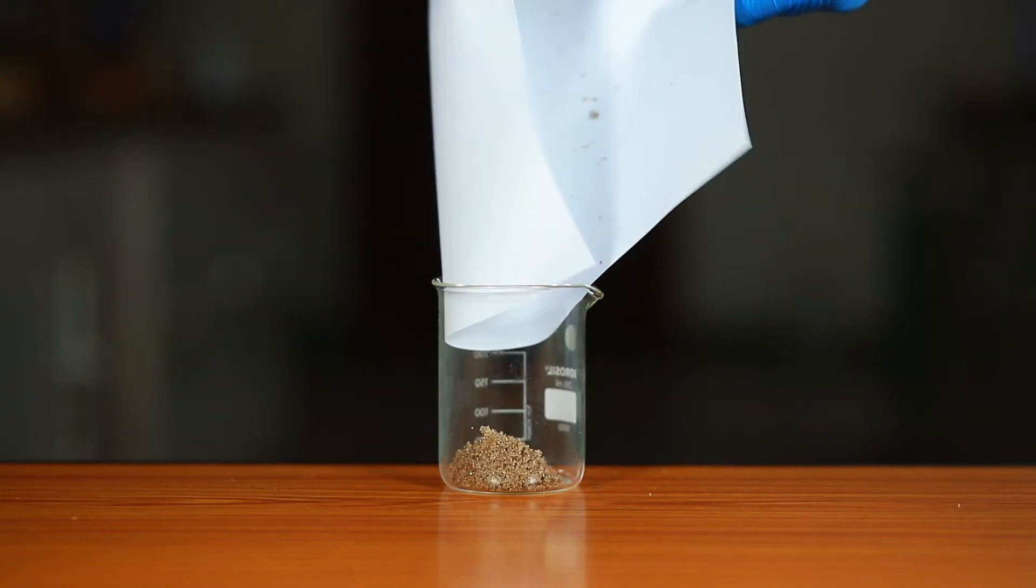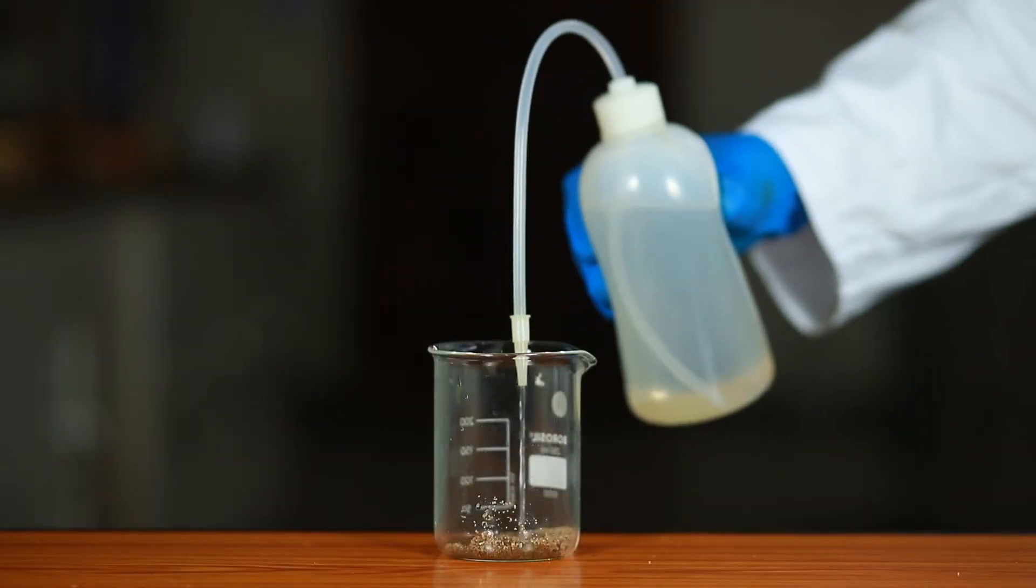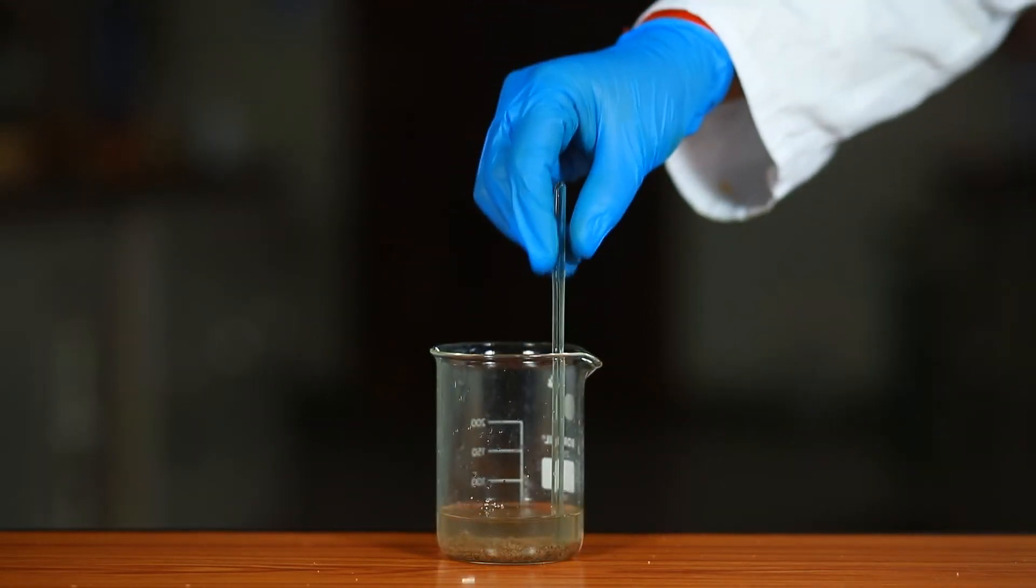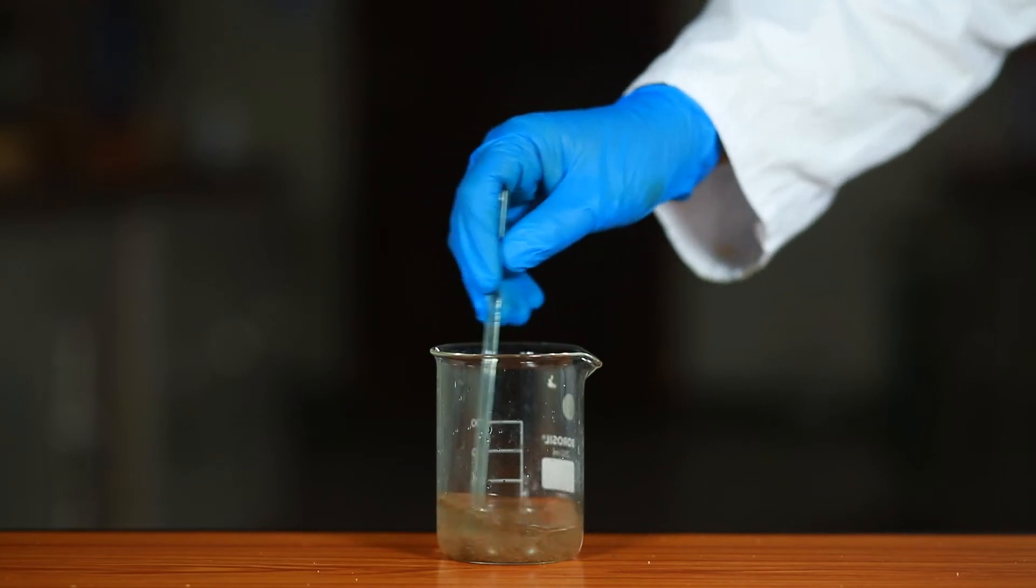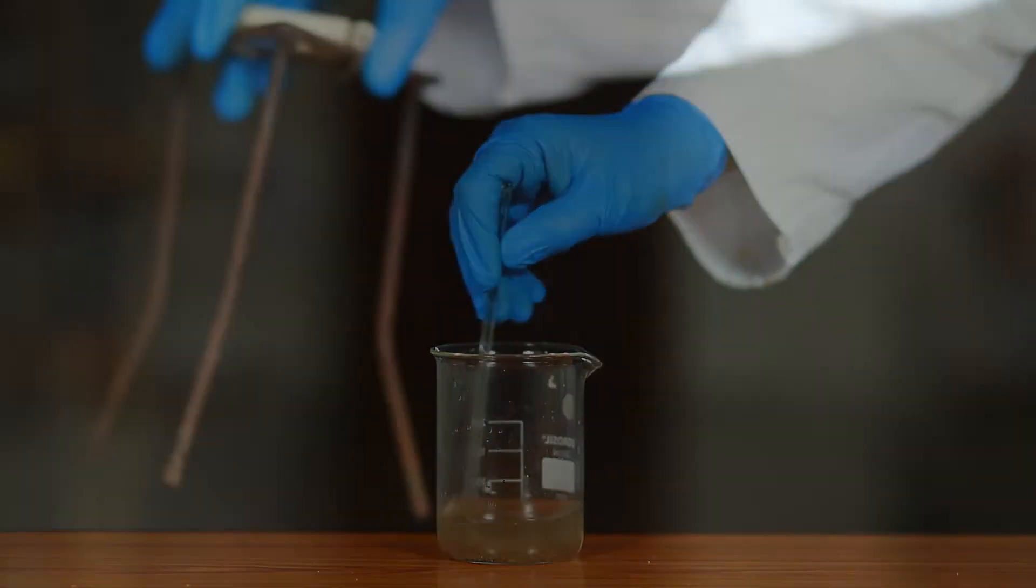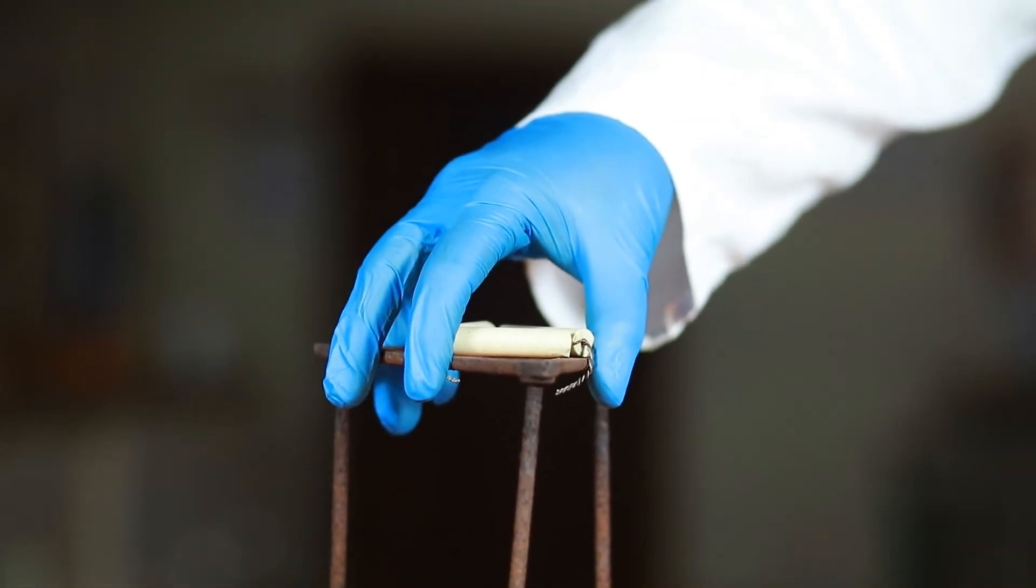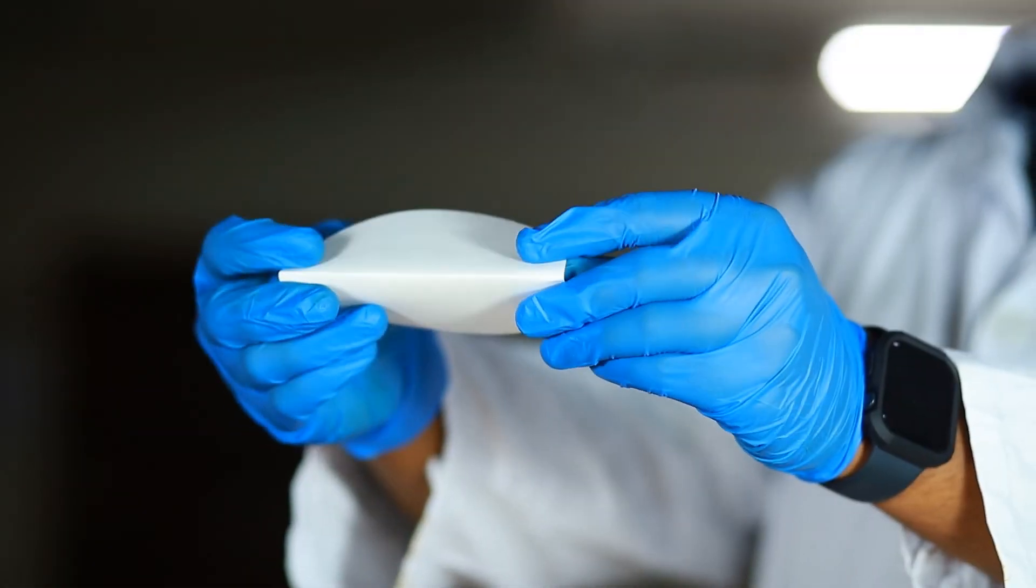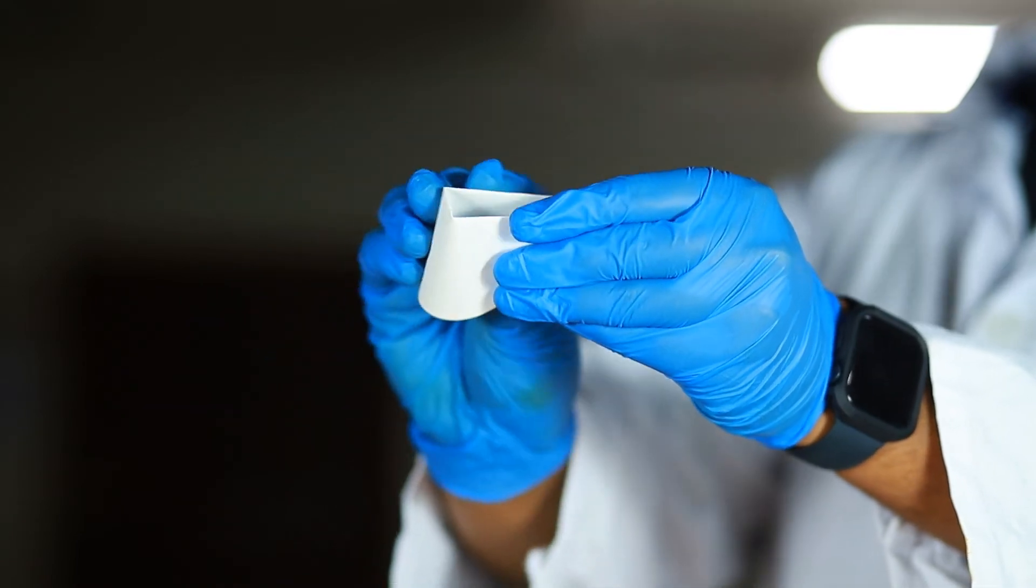Add a sufficient amount of water using a wash bottle to cover the mixture. Stir the contents of the beaker with a glass rod for some time. Place a tripod stand, keep the funnel in the tripod stand. Fold the filter paper and place it inside the funnel.